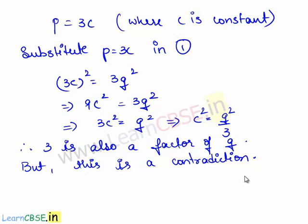The obtained contradiction is due to our wrong assumption that root 3 is a rational number. Therefore, root 3 is an irrational number.